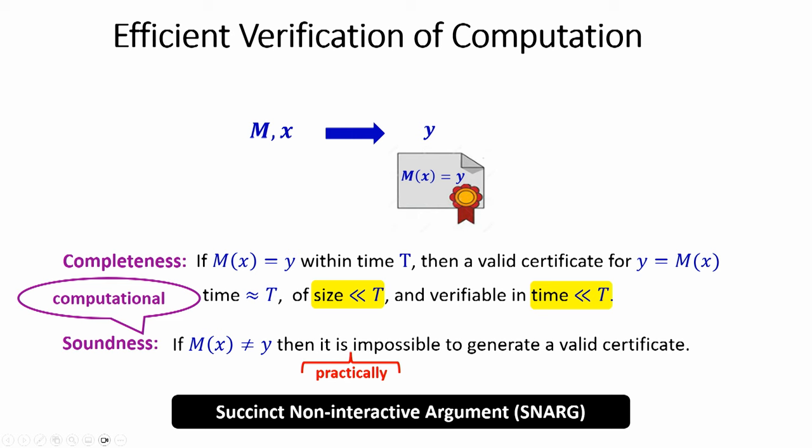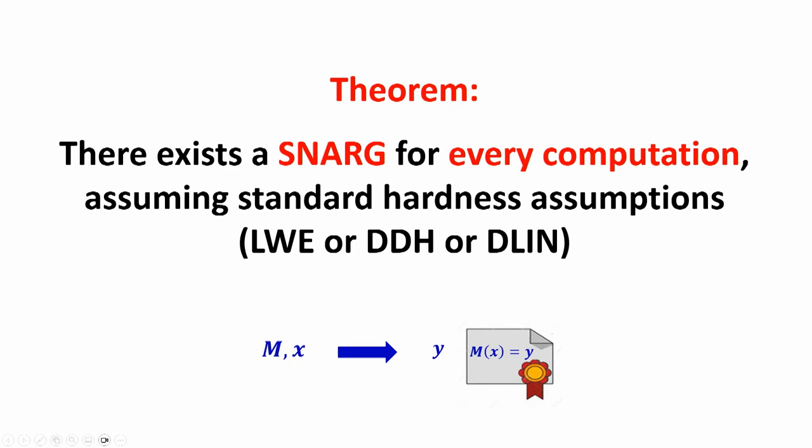What I want to show you today is how to construct such SNARGs. Here's the theorem: there exists such a SNARG — such a certificate — for every computation. Every computation can have a SNARG generated under standard cryptographic assumptions, for example learning with errors. We have other assumptions as well, some other number-theoretic assumptions.